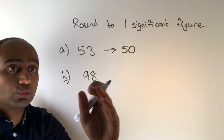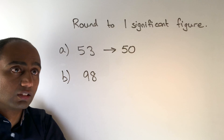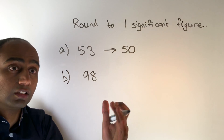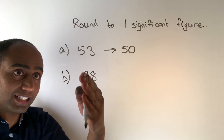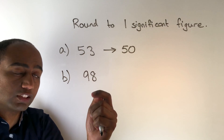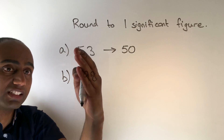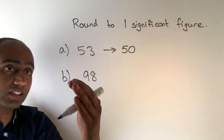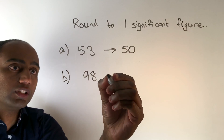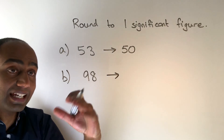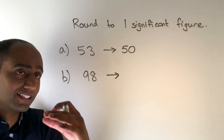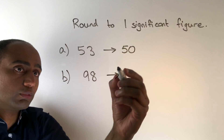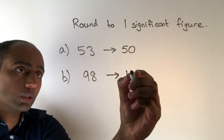In question B we need to round 98 to one significant figure. Again, the biggest place value column is the tens column, so we need to round this to the nearest 10. This is closest to 100 — it's closer to 100 than to 90, so it rounds to a hundred.